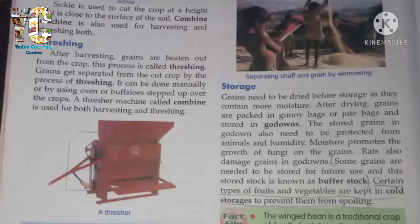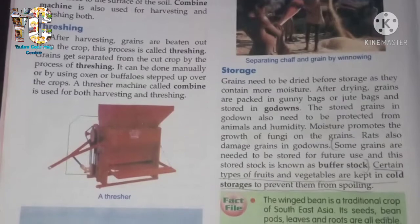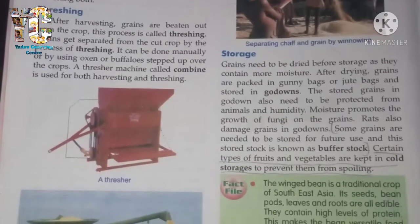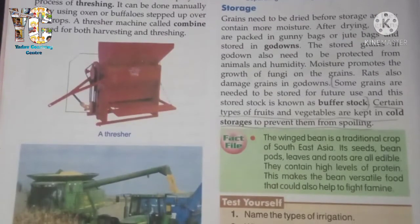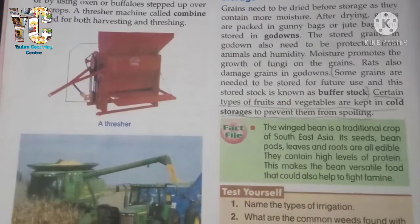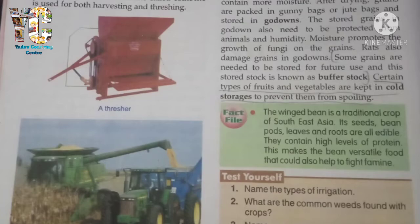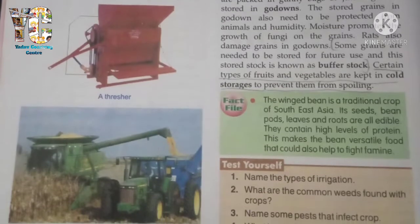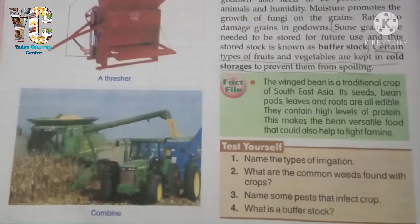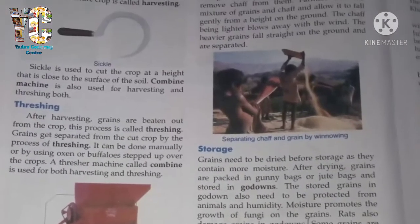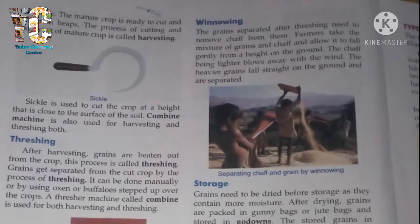Threshing is the removal of grains from the crop plant. After harvesting, grains are beaten out from the crop — this process is called threshing. It can be done manually, using oxen or buffalo stepping over the crops, or using a thresher machine called a combine, which is used for both harvesting and threshing.